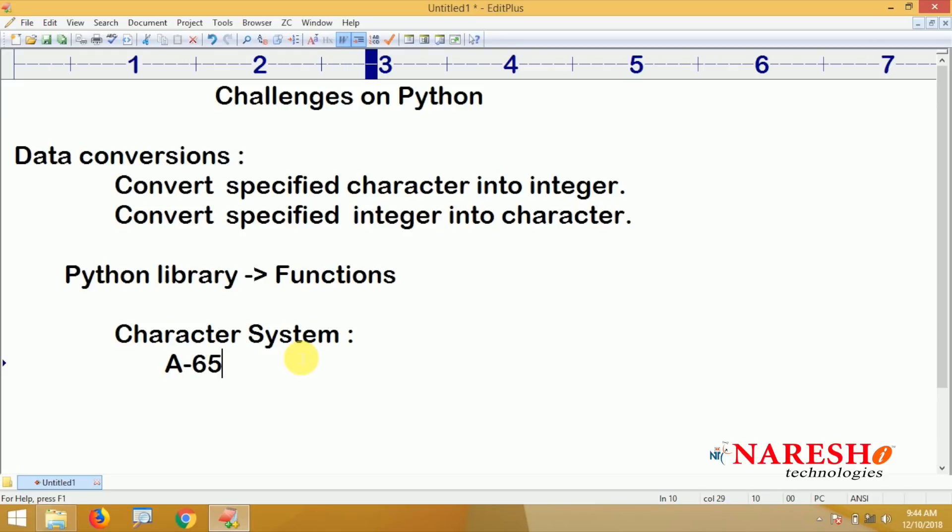there is one constant integer value. Capital A has a value, capital B has a value, and so on up to capital Z.